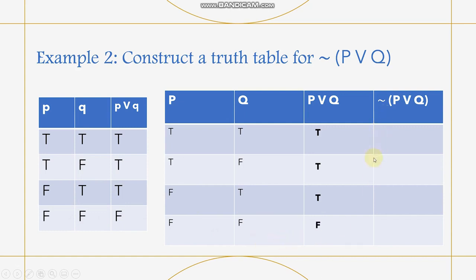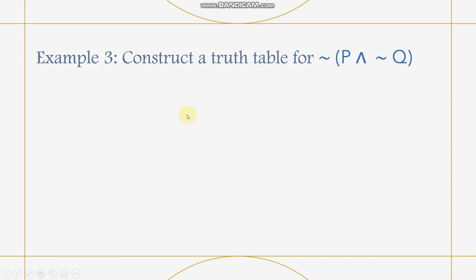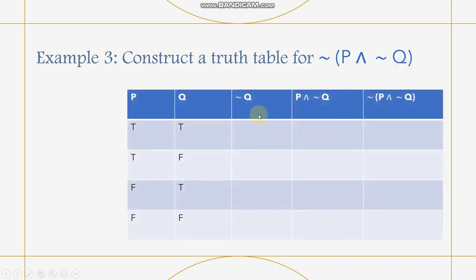Next we get the negation: the negation of true is false, and the negation of false is true. I hope you follow. For the third example, we have P∧¬Q. First, we get the value of ¬Q. We look at the negation table: the negation of true is false, the negation of false is true. Now we have the value of ¬Q.